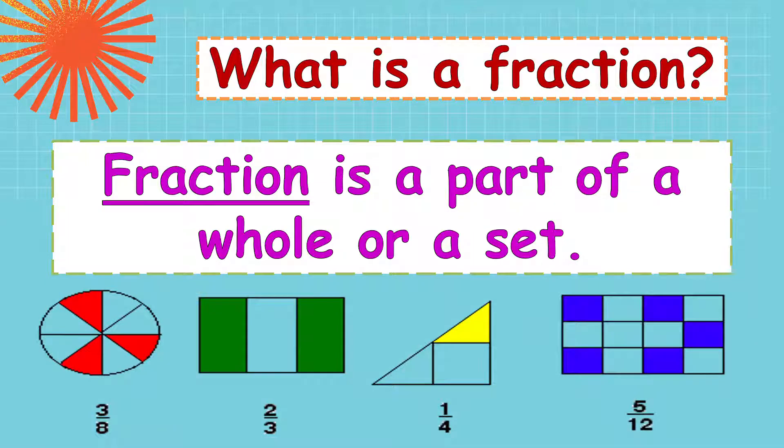Next, the rectangle is divided into 12 equal parts. And then, how many parts are colored blue? 5. So, the name of the fraction is, of the colored part is 5 twelfths. Okay? So, let's go back now to the problem.